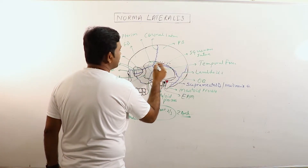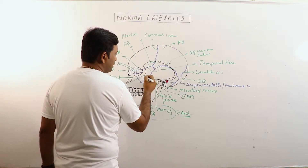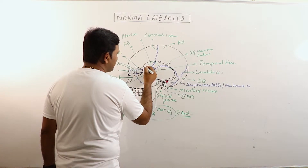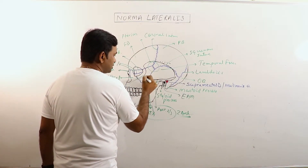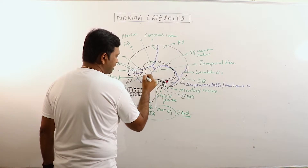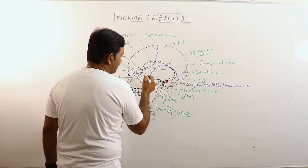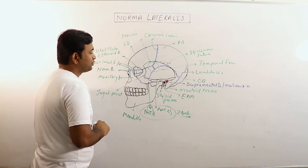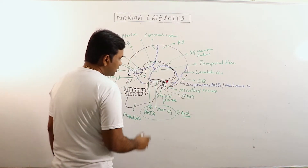The floor of the temporal fossa is crossed anteriorly. The anterior wall or anterior margin is formed mainly by the zygomatic bone, with a little part contributed by the frontal bone, and some part may also be contributed by the sphenoid bone. So this is the temporal fossa.